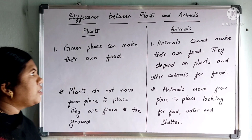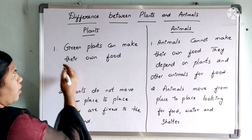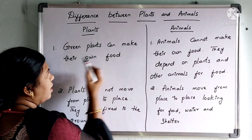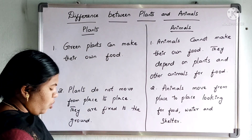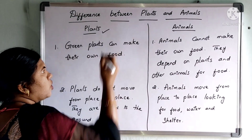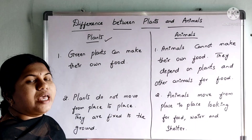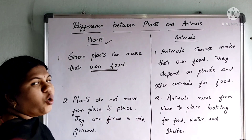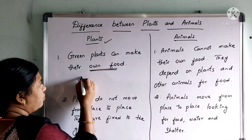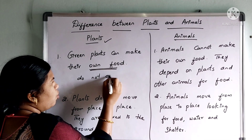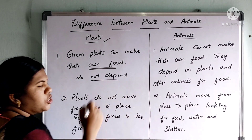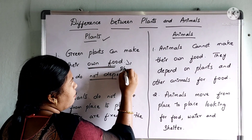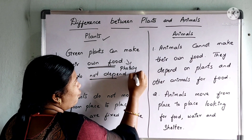The difference between plants and animals is dealt with the following points. Here comes our first point. Green plants can make their own food. Plants have the ability to make or produce their own food. They don't depend on anyone for making their food. How do the plants prepare their food? They prepare their food with the help of the process known as photosynthesis.